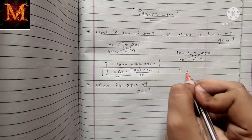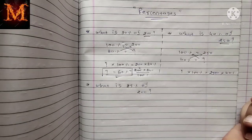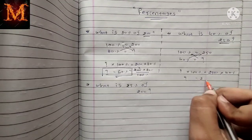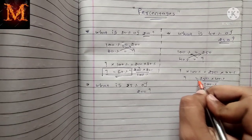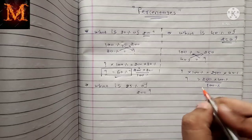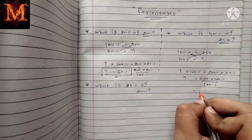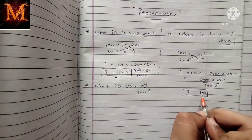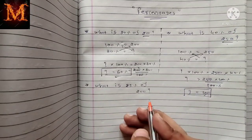What you have to do is multiply this 40% with 250, and this question mark with 100%. So question mark is equal to 250 into 40% divided by 100%. Cancel the zeros: 25 into 4 equals 100. So 40% of 250 is 100.